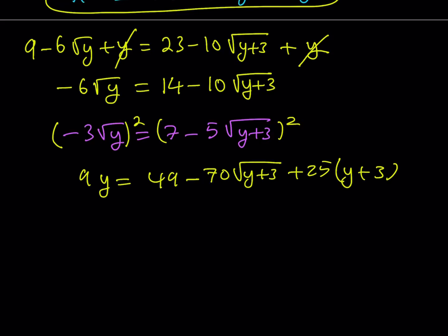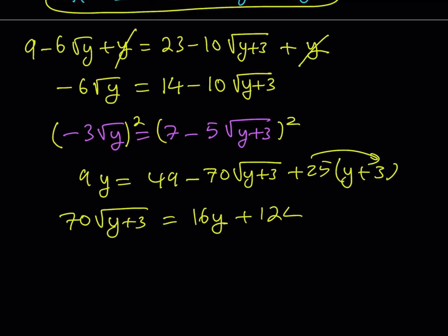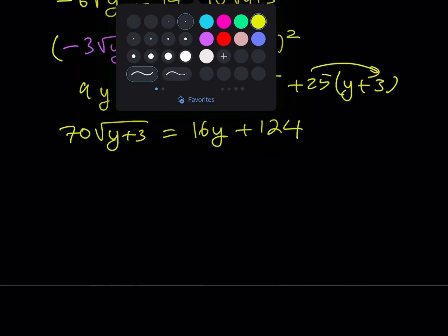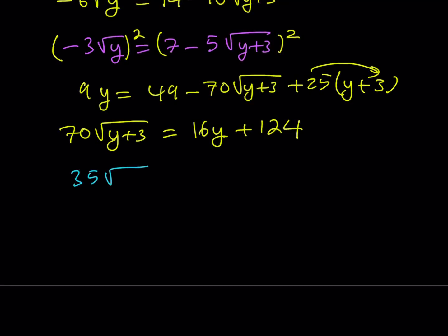Let's simplify as much as we can. I'll isolate 70 times the square root of y plus 3. Bringing the 9y over: 25y minus 9y gives 16y. And 25 times 3 is 75; adding 49 gives 124. So I have 70 times the square root of y plus 3 equals 16y plus 124. Dividing everything by 2 gives 35 times the square root of y plus 3 equals 8y plus 62.